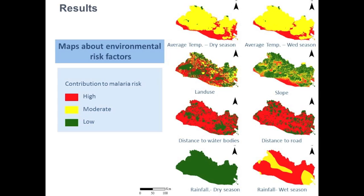Now I will show you the main results. Through GIS tools, different risk factor maps were generated. This slide shows the environmental risk factor maps: the temperature map, land use map, slope map, distance to water bodies map, distance to road map, and rainfall map. Maps for each season — wet and dry — were defined for weather-related risk factors, rainfall and temperatures. There are large differences between seasons in rainfall maps, and only small differences in temperature maps.